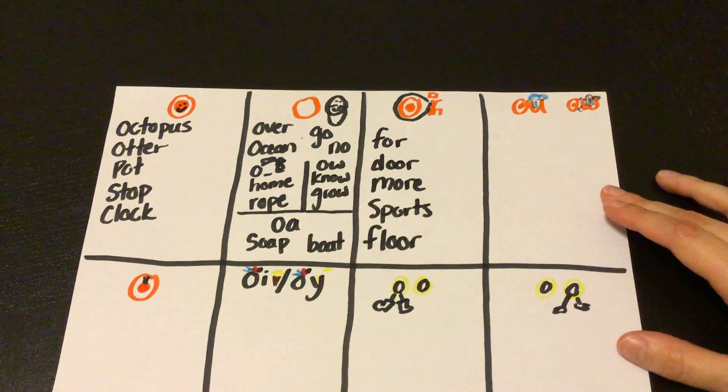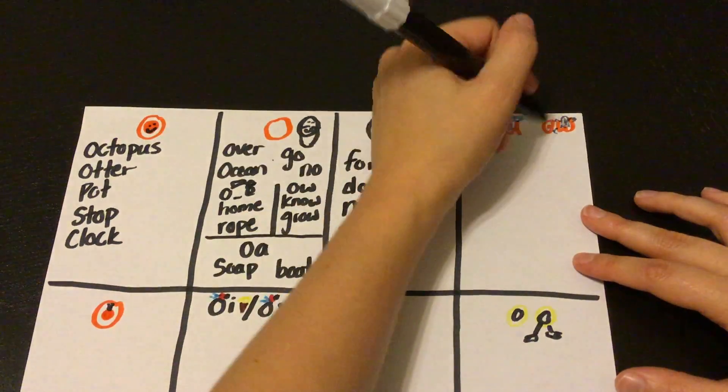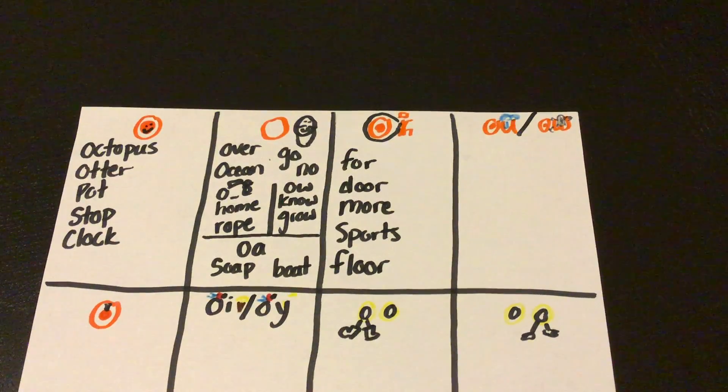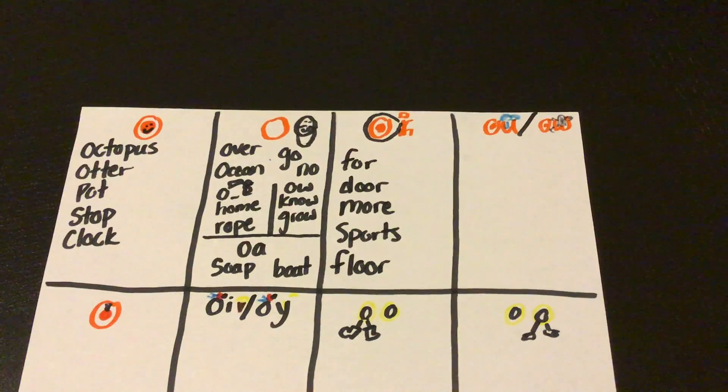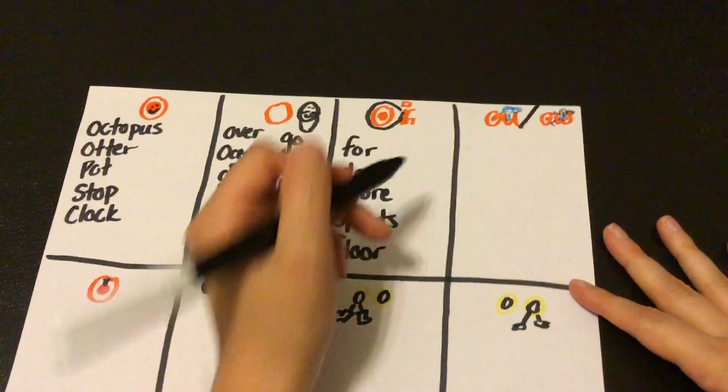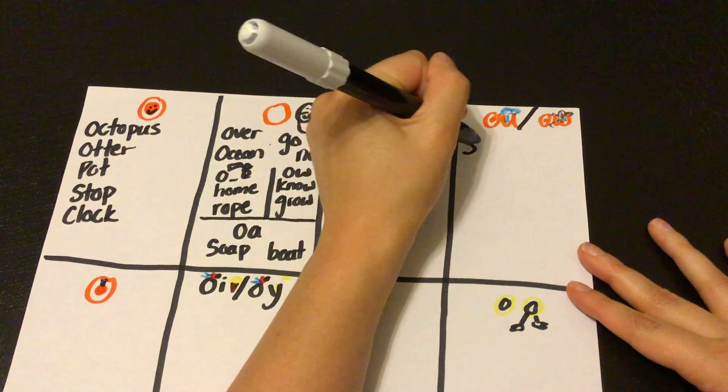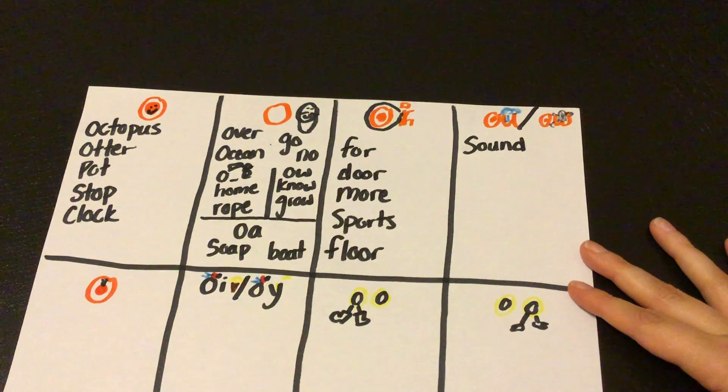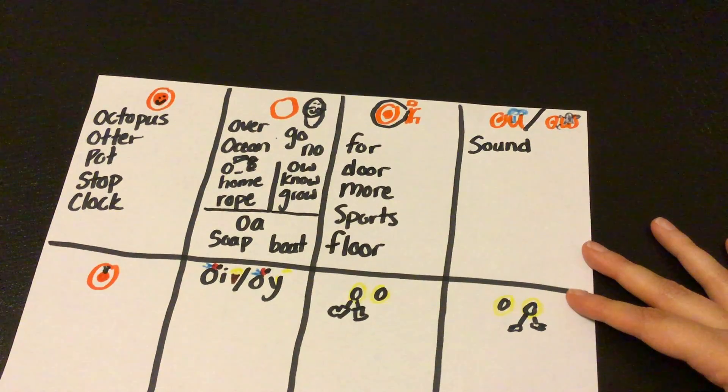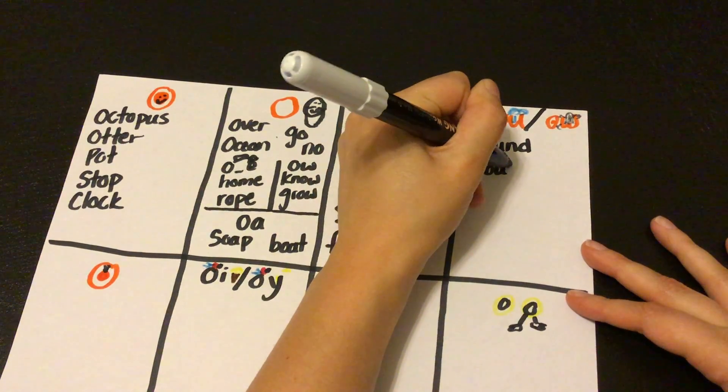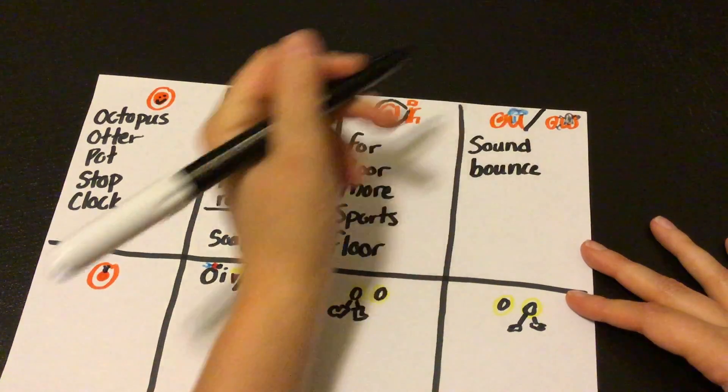O-U words, O-U or O-W, either one, says ow, right? So we have words like sound, sound, right? We hear that ow sound in the middle, or bounce, B-O-U-N-C-E, bounce.